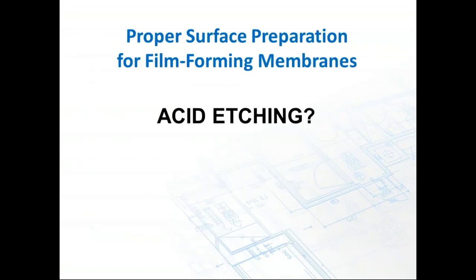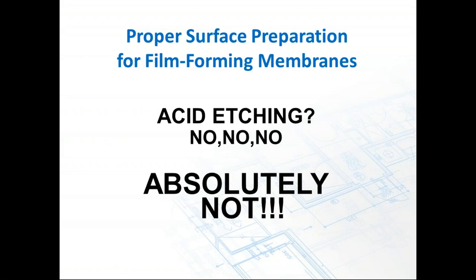Proper surface preparation for film-forming membranes — is acid etching okay? Absolutely not. We're going to add more acid residue to a floor that already has one. That acid you use to etch the floor goes down into the pores, opens them up, and coats the inside of those pores with acid. The first time moisture rises up to the top, who knows what the pH number is going to be. No acid etching — please stop this. I don't care how long you've been doing this or who showed you that method.